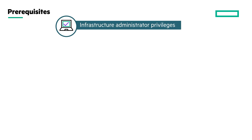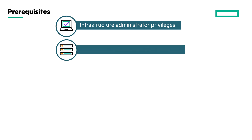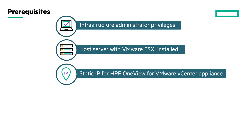Perform these checks before installation. You have infrastructure administrator privileges to both HPE OneView and HPE OneView for VMware vCenter appliances. You have a host server with VMware ESXi installed. You have an IP address with gateway, subnet mask, and DNS server details for the HPE OneView for VMware vCenter appliance with the FQDN configured for the selected IP.